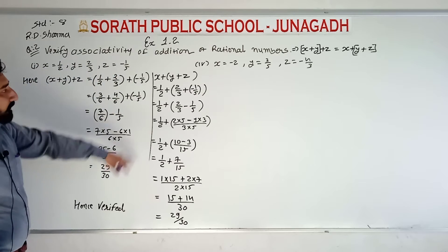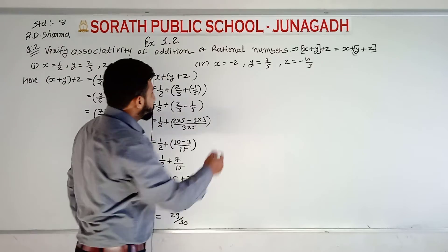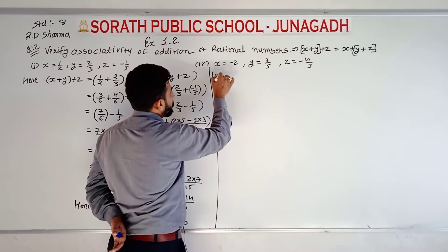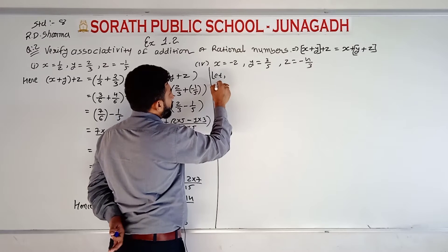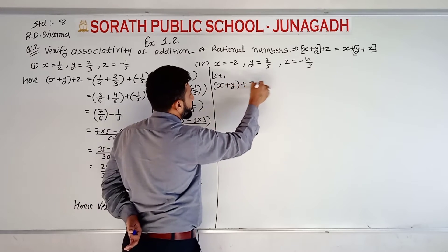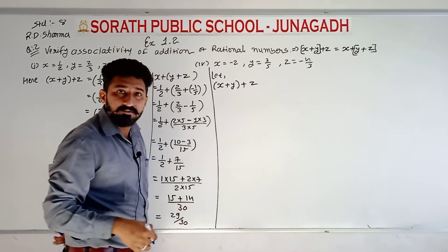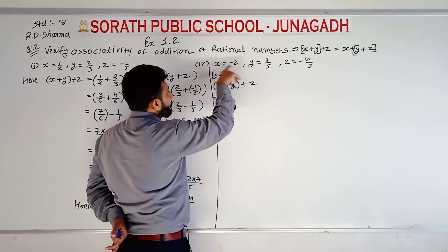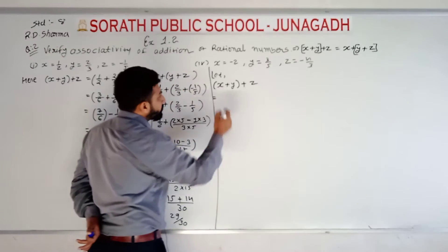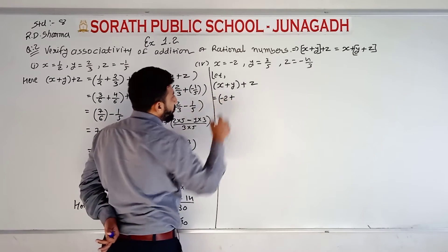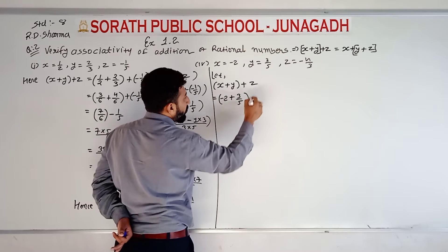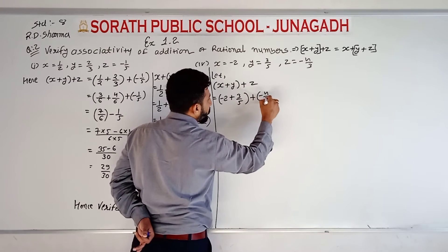Now the second example. Let the first condition be: x plus y plus z. Here we substitute the values: x is minus 2, plus y equal to 3 upon 5, plus z equal to minus 4 upon 3.